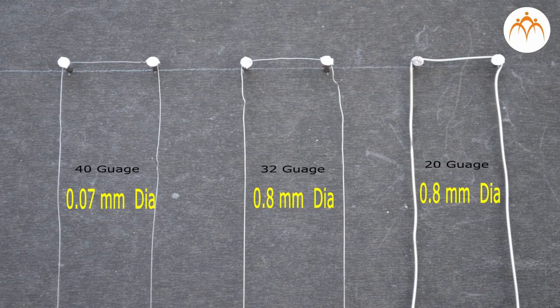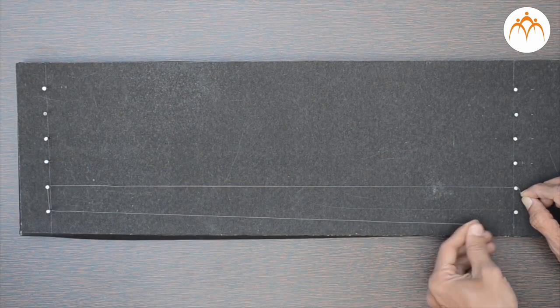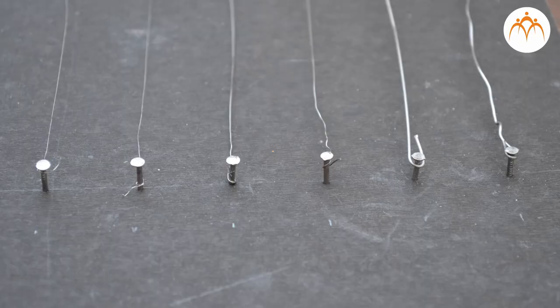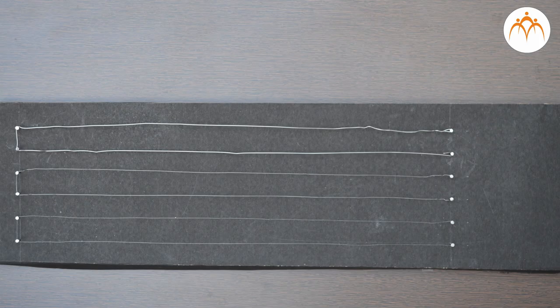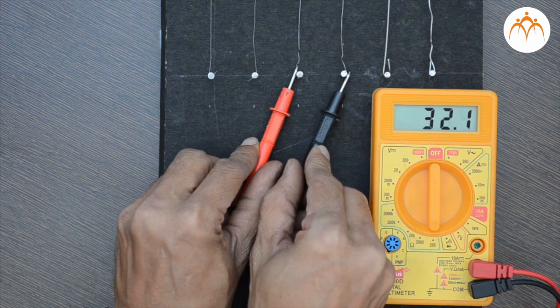As you know, resistance of material changes with respect to length and area. One meter nickel chromium wire of different thickness is taken and its resistance is measured with the help of a multimeter. Resistance is higher for thin wire while it is lower for thick wire.